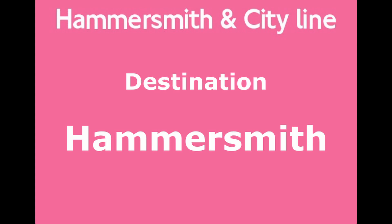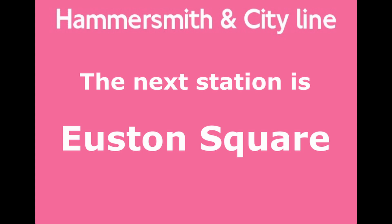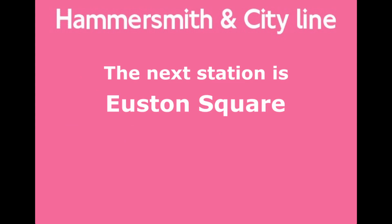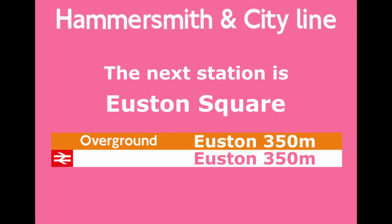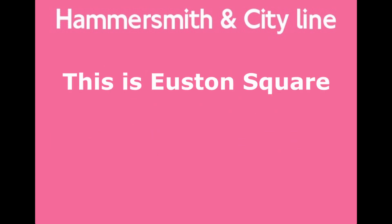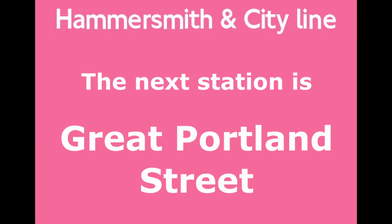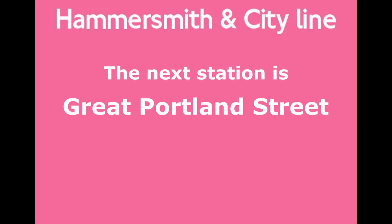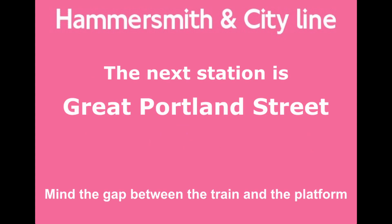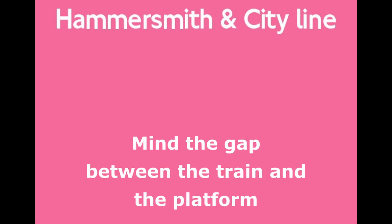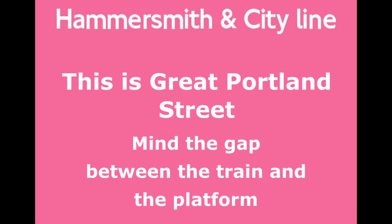This is a Hammersmith and City Line train to Hammersmith. The next station is Euston Square. Change for London Overground and National Rail Services from Euston. This is Euston Square. This is a Hammersmith and City Line train to Hammersmith. The next station is Great Portland Street. Mind the gap between the train and the platform. This is Great Portland Street.